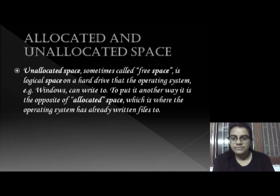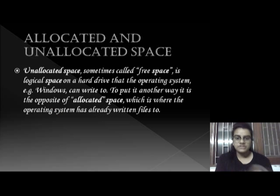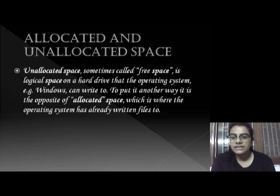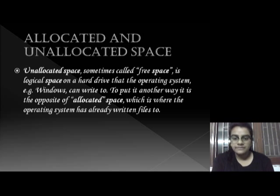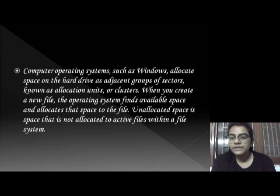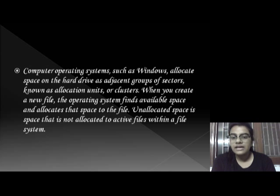The new terms are allocated and unallocated space. Unallocated space, sometimes called free space, is logical space on a hard drive that the operating system — for example, Windows — can write to. It is the opposite of allocated space, which is where the operating system has already written files. Computer operating systems allocate space on the hard disk drive as adjacent groups of sectors known as allocation units or clusters. When you create a new file, the operating system finds available space and allocates it to the file. Unallocated space is space not allotted to active files within a file system.